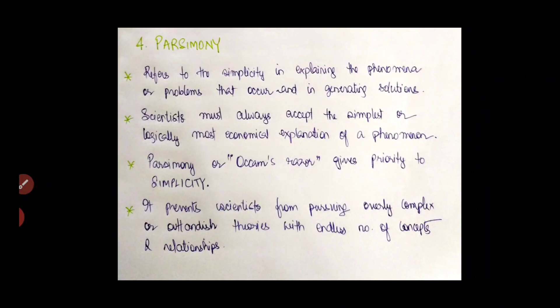Scientists must always accept the simplest or logically most economical explanation of a phenomena. So when I say economical explanation, I mean refrain from using unnecessary superfluous words or terms. Just stick to the most easy ones. Parsimony is also called Occam's razor. I'll get to the next slide and talk more about Occam's razor. It gives priority to simplicity. It prevents scientists from pursuing overly complex or outlandish theories with endless number of concepts and relationships.